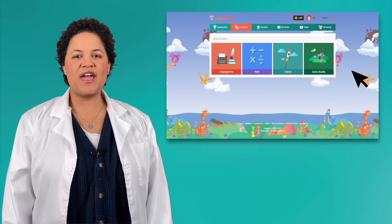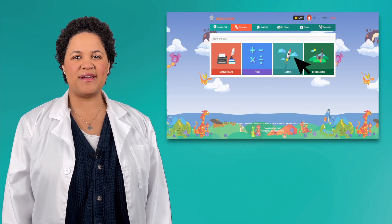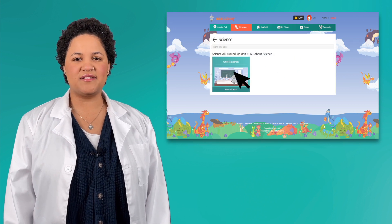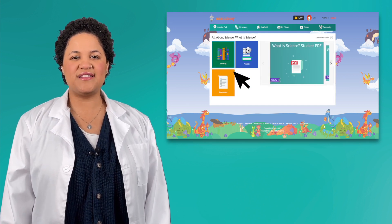In order to see your Science All Around Me lessons, just like this video, your grown-up has to assign them to you. Once a lesson has been assigned to you, it will show up in your lessons under the Science category. When you click on a lesson, you will see a screen like this.